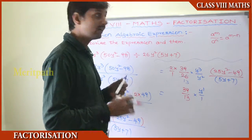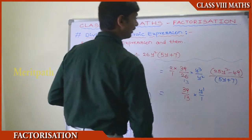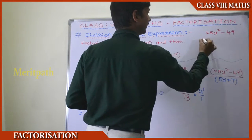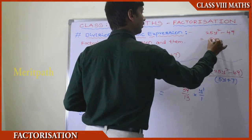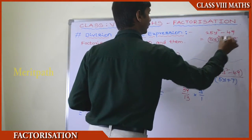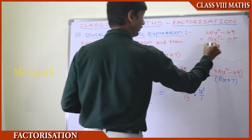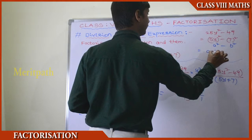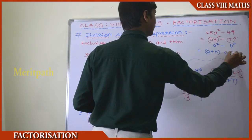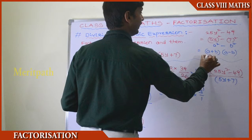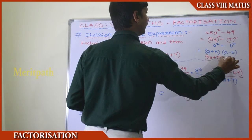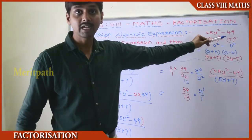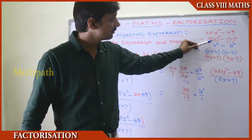We observe that 25y² − 49 can be written as (5y)² − 7², which is clearly in the form of a² − b². Using the identity a² − b² = (a + b)(a − b), this becomes (5y + 7)(5y − 7).